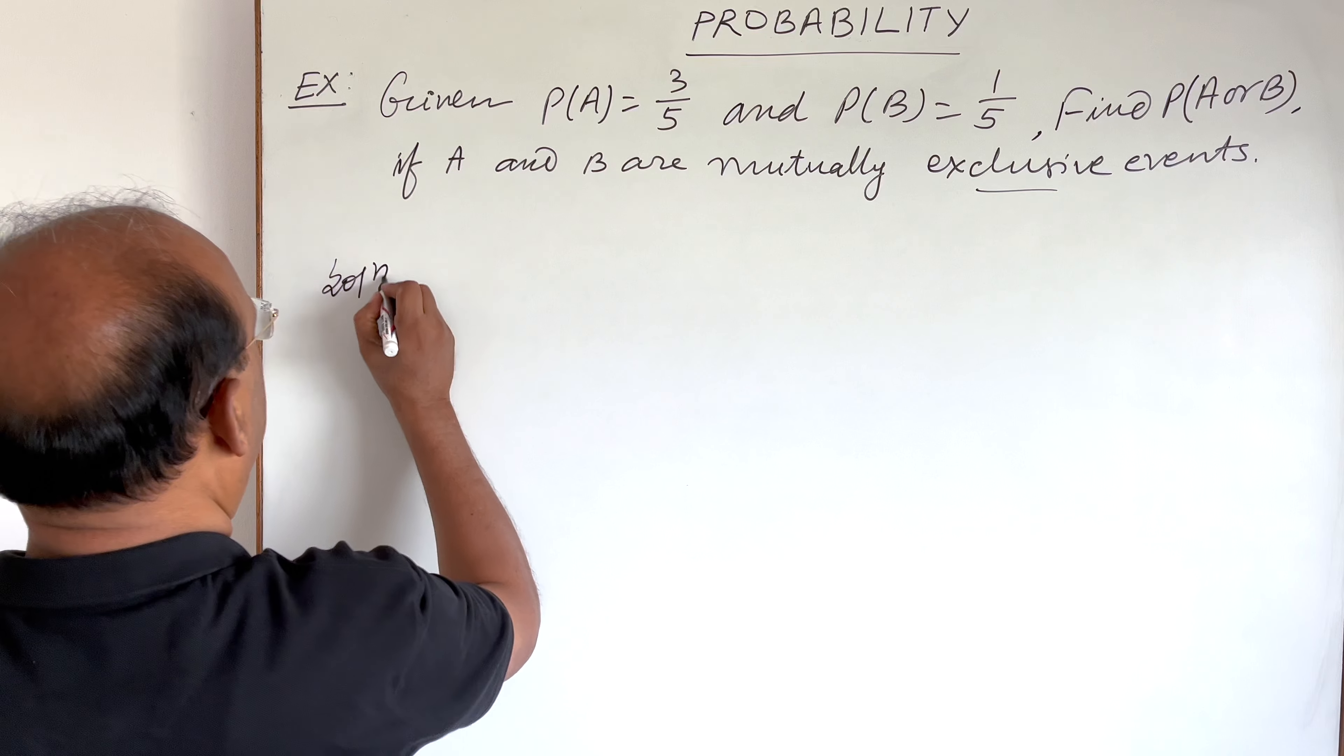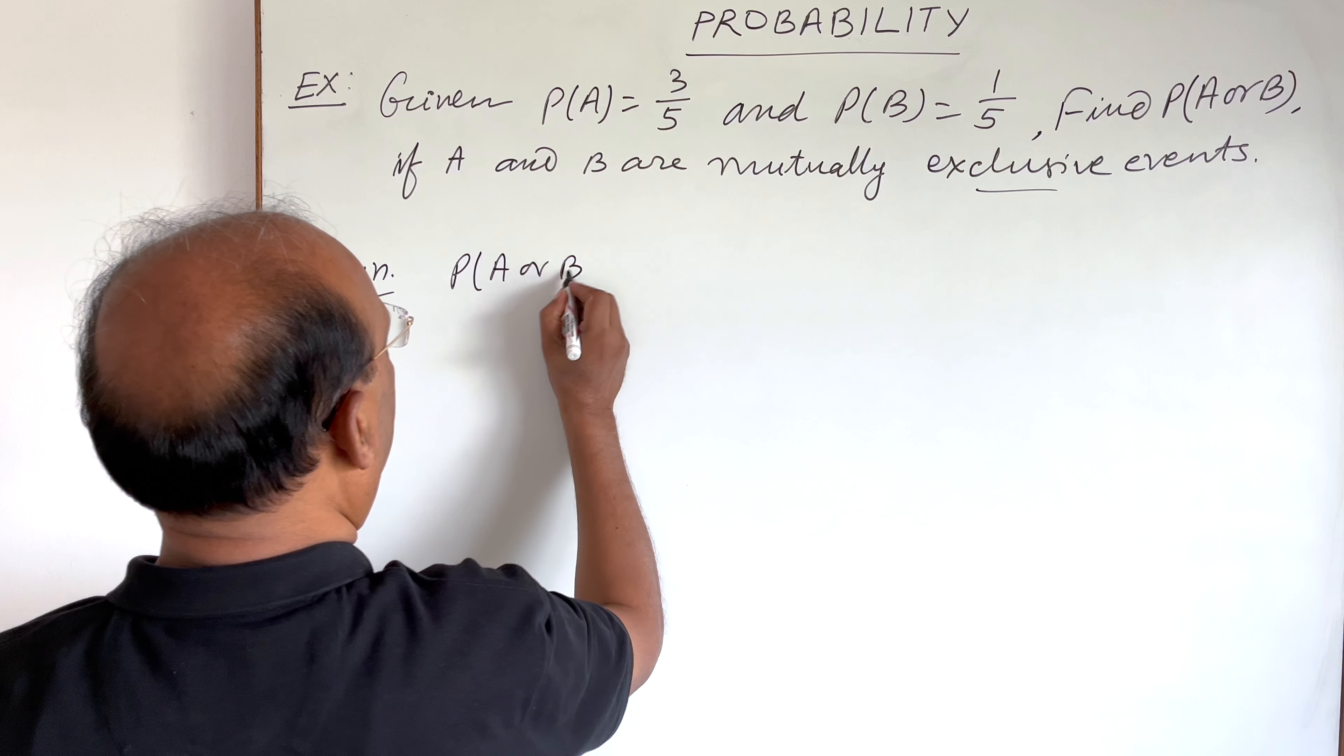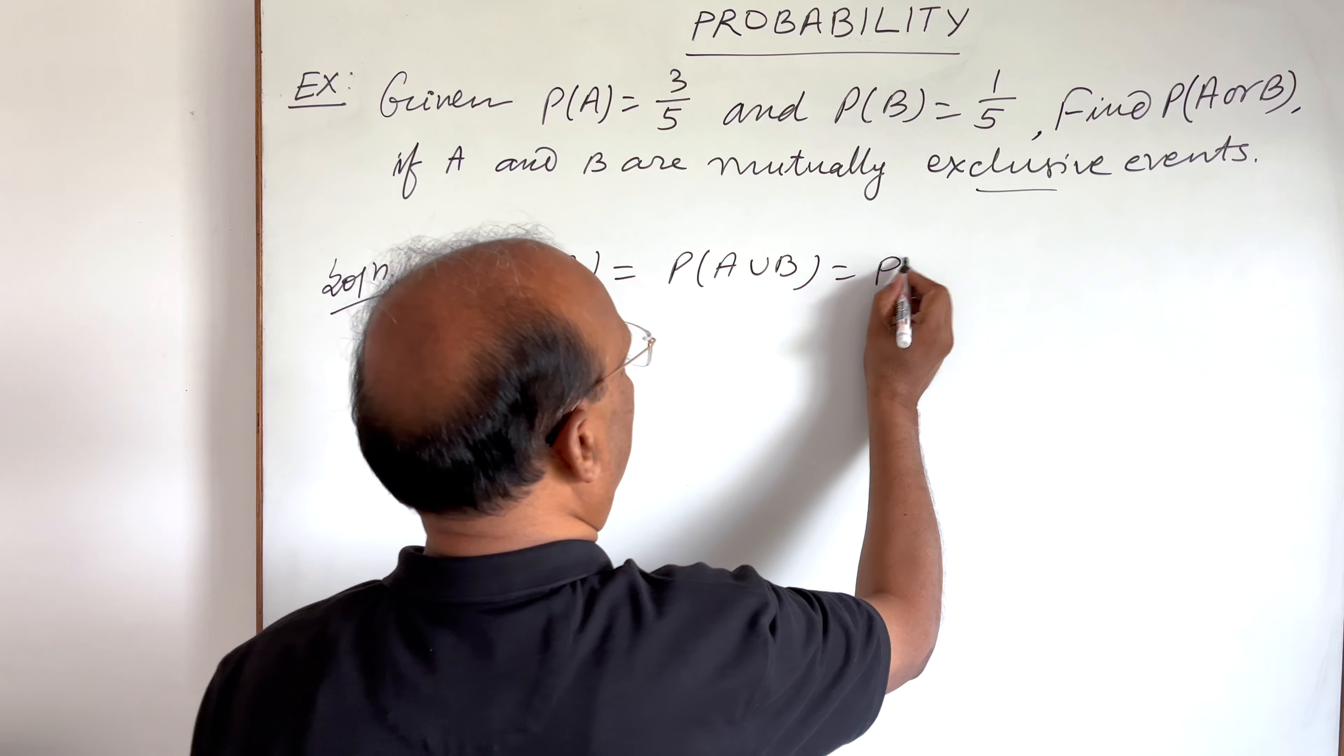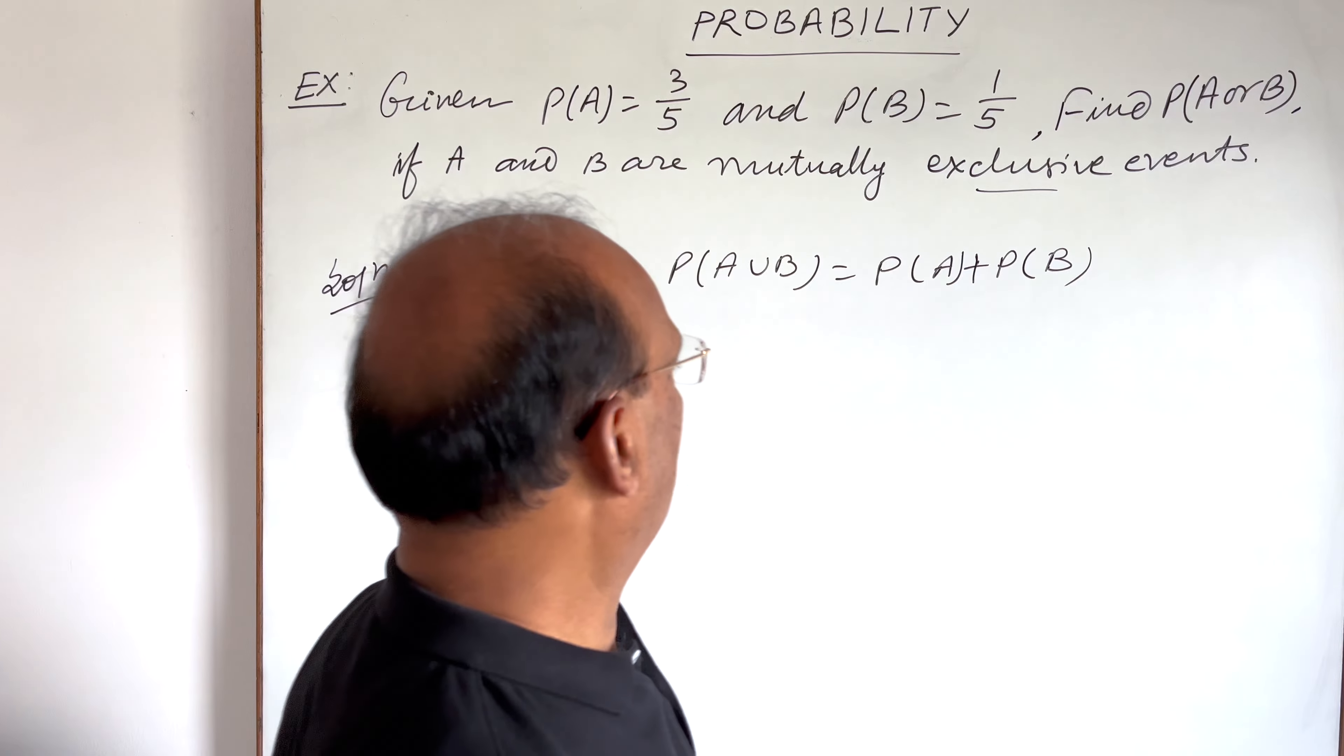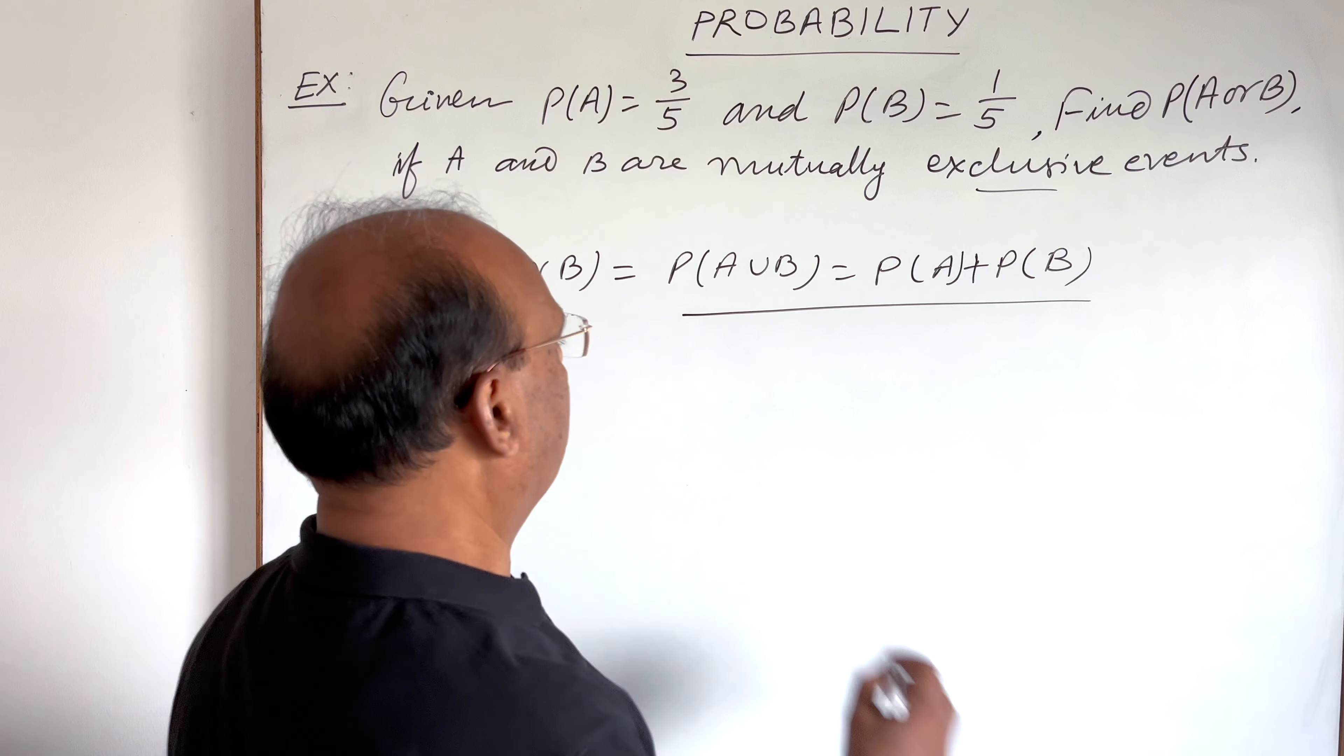The formula is very simple: probability of A or B, I mean this is probability of A union B, this is equal to probability of A plus probability of B. Very simple formula, we have to remember this formula. So therefore,